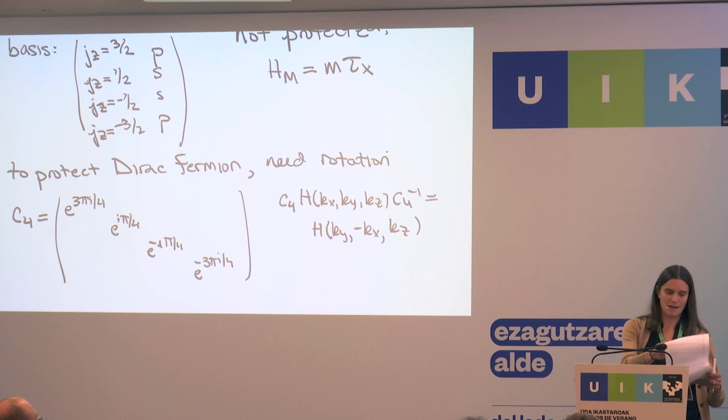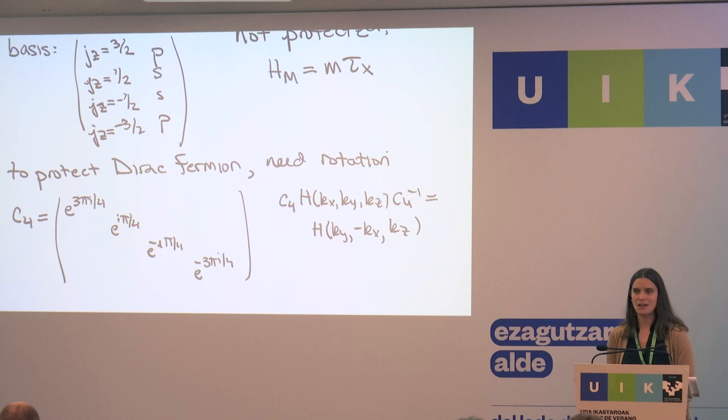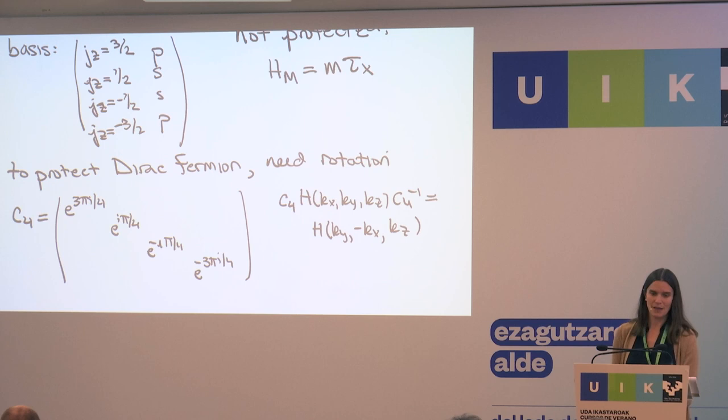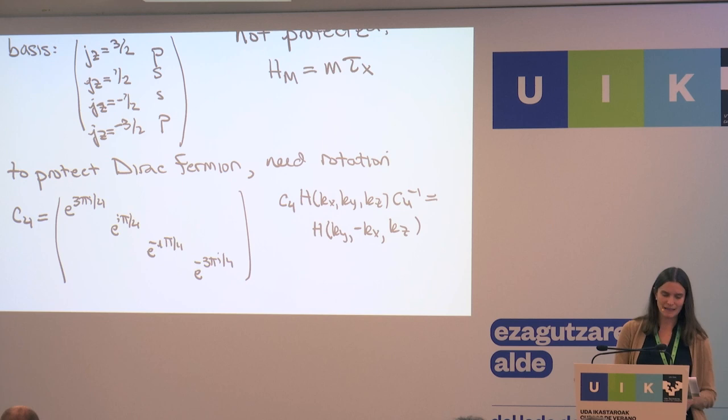The main message is: Weyl fermions that we talked about yesterday are protected — they don't need any symmetry to protect them, they're protected purely by topology. But Dirac fermions are different — they actually need symmetry to protect them, and they don't have the topology. They don't have a Chern number. I'm going to come back later to talk about whether there's any topology that we should associate with them.